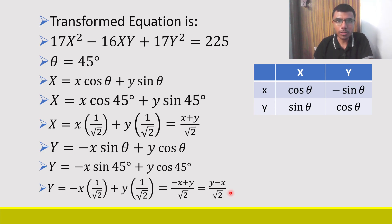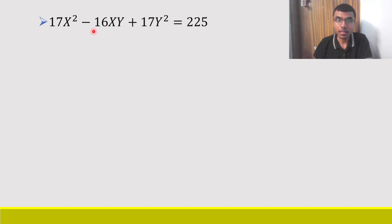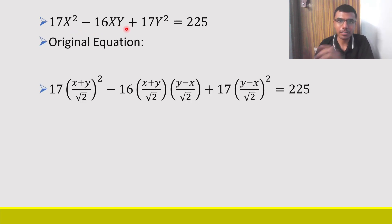We know the transformed equation. This is our transformed equation and I need to find out the original equation. For that just write capital X in terms of small x and small y, and capital Y in terms of small x and small y. We already got it right. Now the original equation would be nothing but this. In place of capital X I wrote (x + y)/√2, and in place of capital Y I wrote (y - x)/√2.